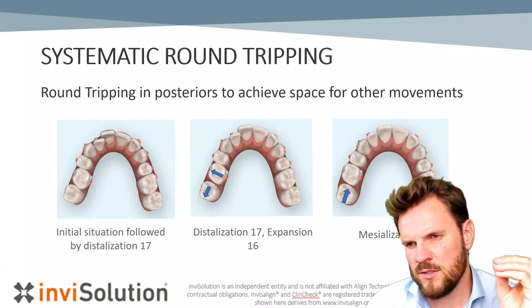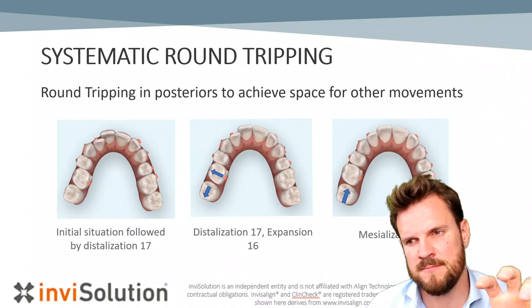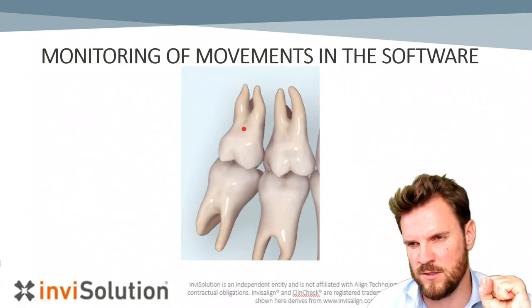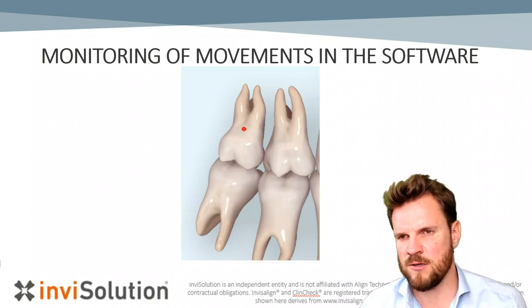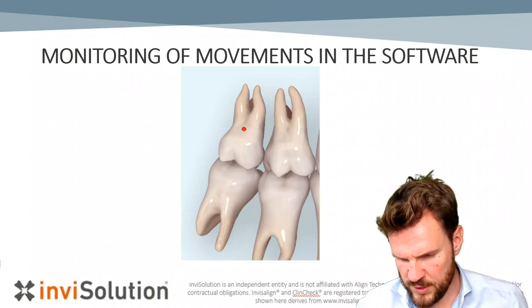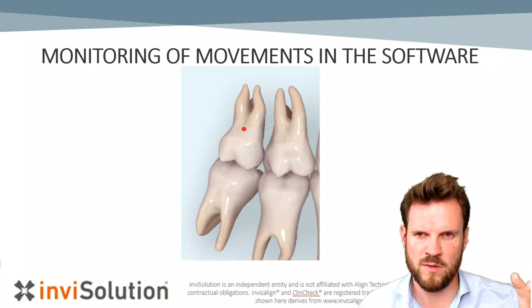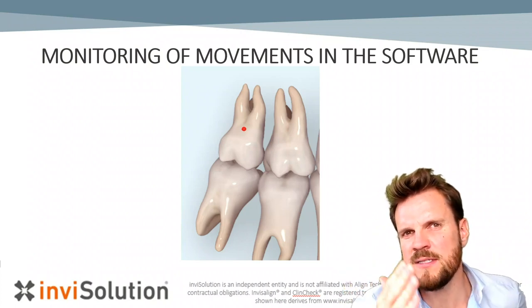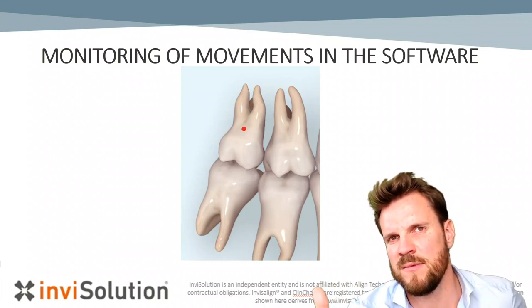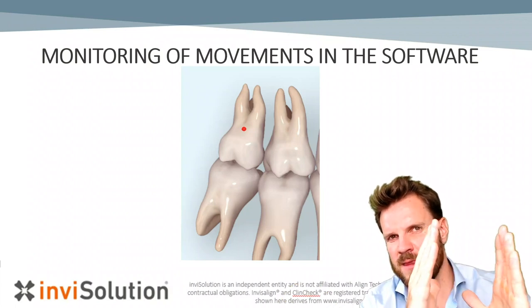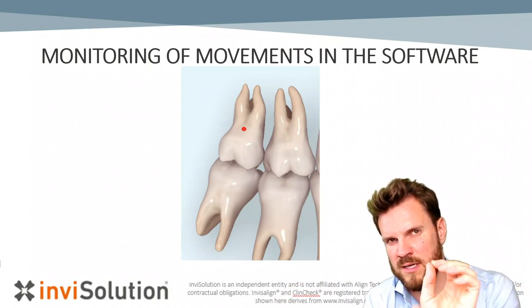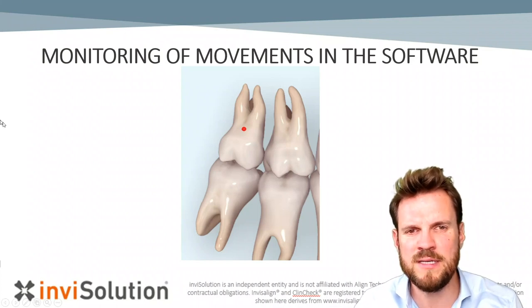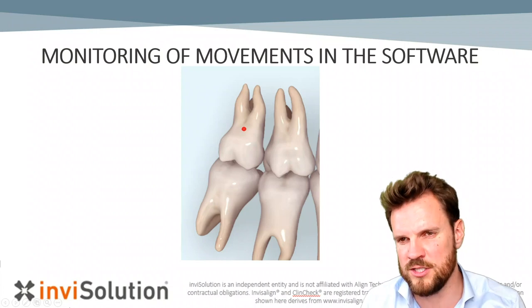The next clean check I would like to show you is clean check number three. In this clean check, I'm talking about monitoring the movements of the software in a very specific way. Before I show you the clean check, I need to explain a little bit more about the internal protocols. There are measurement points for movements — and the maximum of movement is 0.25 mm of translated movement. But the software is measuring the movement not only in the middle of the tooth; there are different types of measuring points. That means it could be that you do not have the maximum movement you would like to have in your clean check.